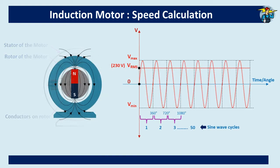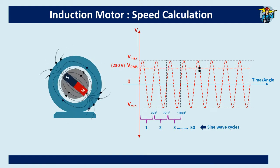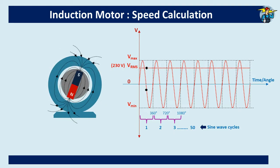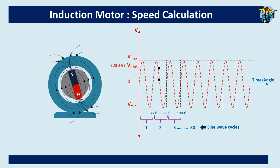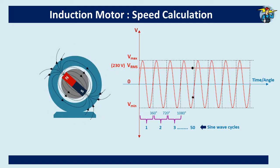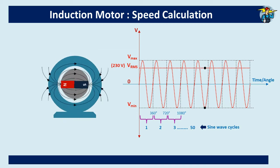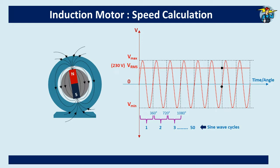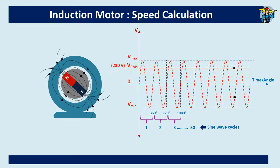Let's see what the frequency of the supply voltage means. Frequency is the number of voltage waveforms or cycles repeated in a time period of one second. The RMS value of voltage is used for calculations instead of the repeatedly changing voltage values in a cycle, shown as a straight line in the graph. A supply frequency of 50 Hz means that 50 voltage sine wave cycles repeat within one second.